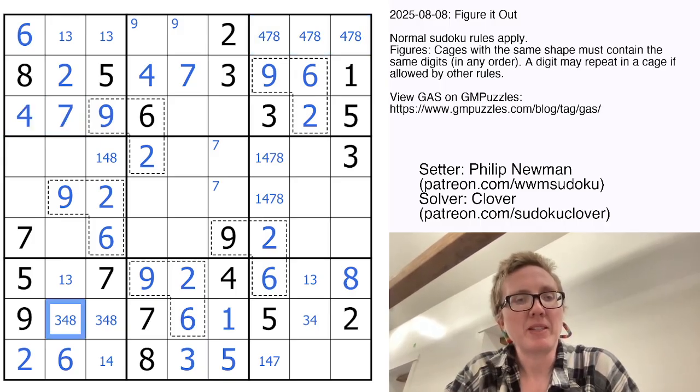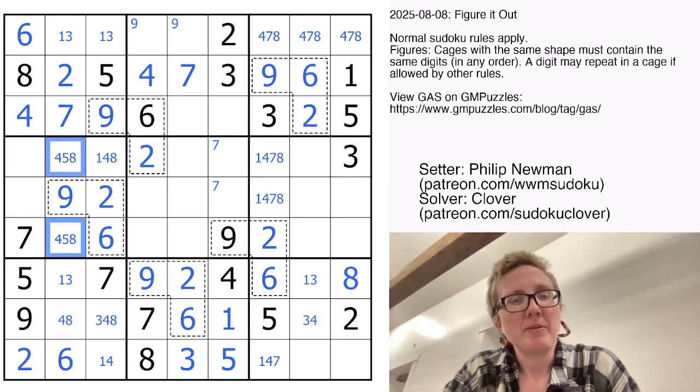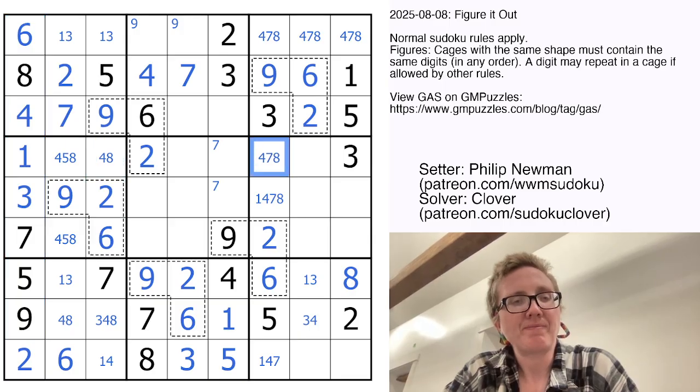So we'll finish up like that. This now can no longer be a 3 because we have a 1, 3 pair there. So these are going to have to be from 4, 5, or 8. And this is also going to be a 1 and 3 to finish off this column. We can eliminate a 1 from there, therefore.